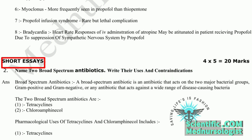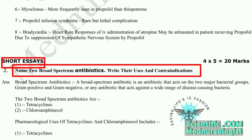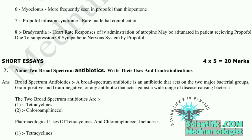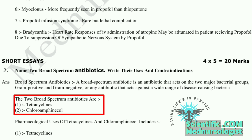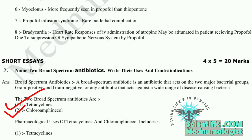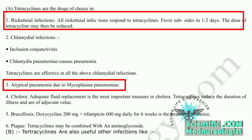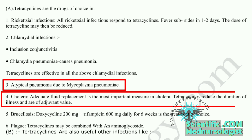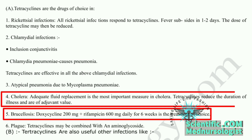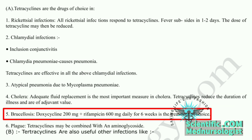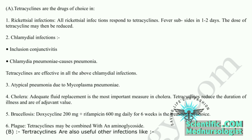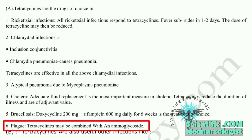Our next part is short essay, which consists of three questions. First: name two broad spectrum antibiotics and write their uses and contraindications. The two broad spectrum antibiotics are: first, tetracycline; second, chloramphenicol. Uses of tetracycline include: first, rickettsial infections; second, atypical pneumonia due to Mycoplasma pneumoniae; third, chlamydia; fourth, brucellosis — doxycycline 200 mg plus rifampicin 600 mg daily for six weeks — tetracycline class drugs are the treatment of brucellosis; fifth, plague — tetracycline plus aminoglycosides are given in plague cases.